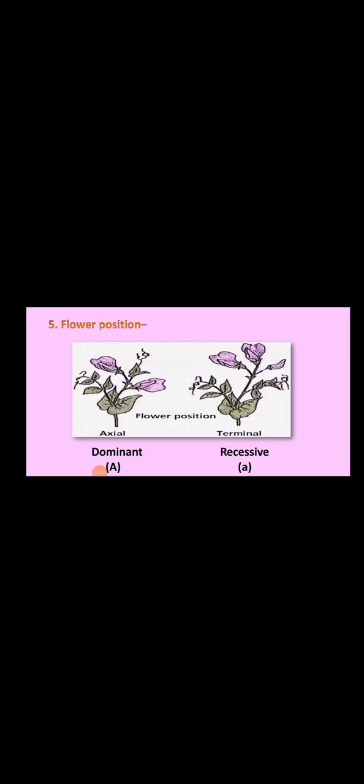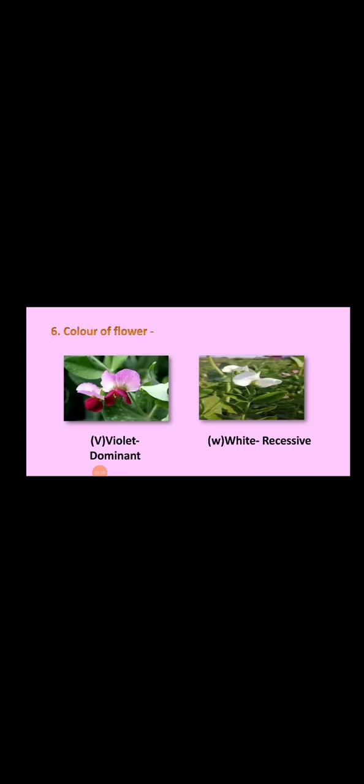Then flower position — as we saw earlier, axial flower position is dominant over terminal. In the axial, you can see the flowers are present on the branches by the side, and in the terminal the flowers are present on the top of the branch. Then flower color — violet is dominant over white, as you can see in the left picture with the purple flower.